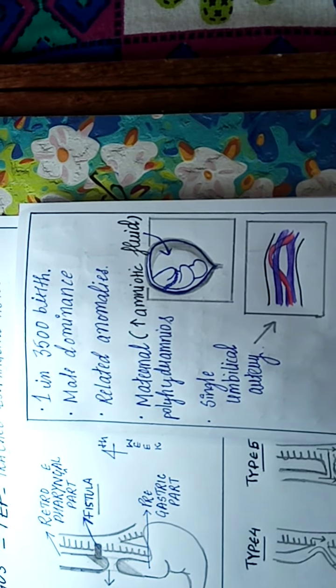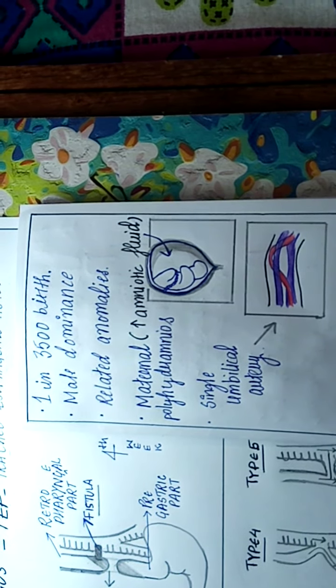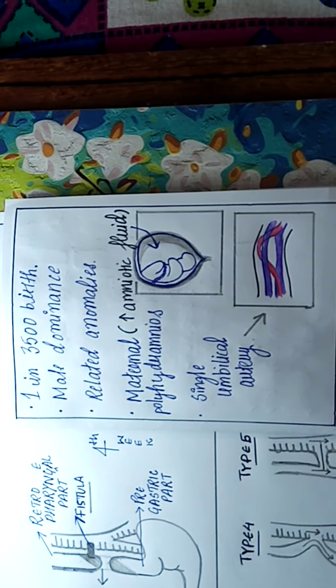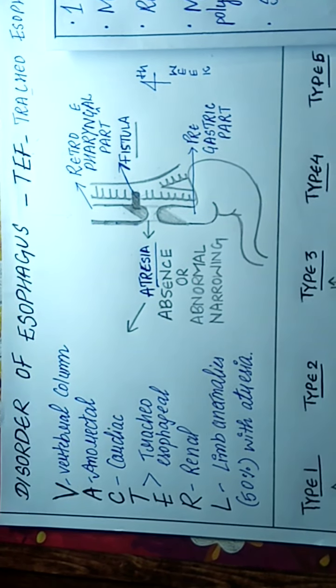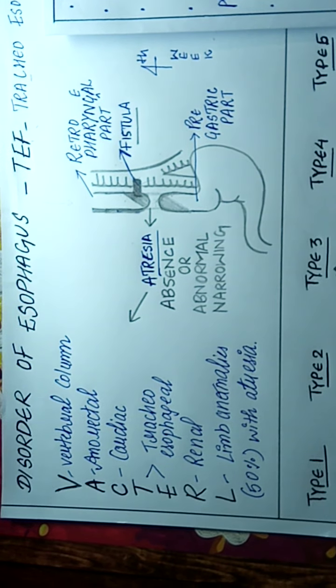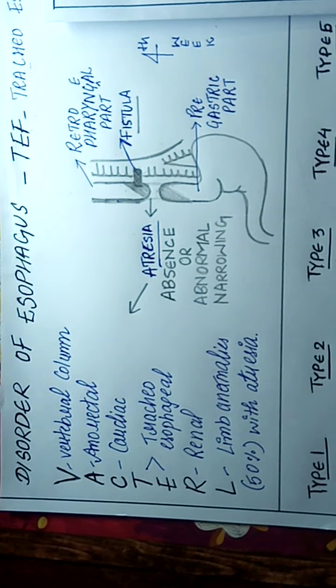Out of 3500 births, one child may have chances of TEF and it is basically male dominant. The atresia can lead to many other related anomalies. The related anomalies can be termed using this acronym V-A-C-T-E-R-L.